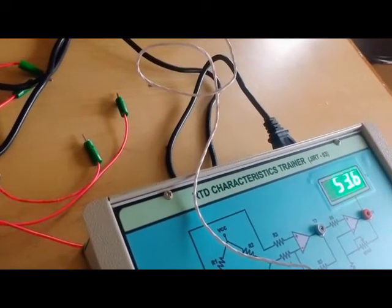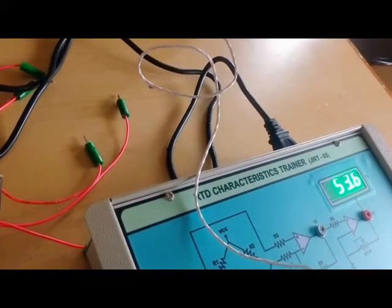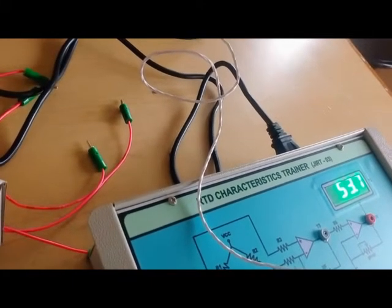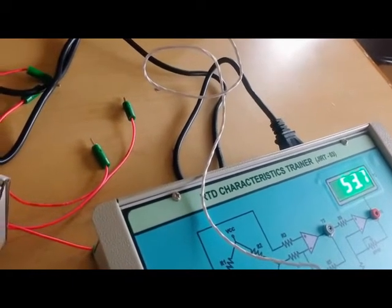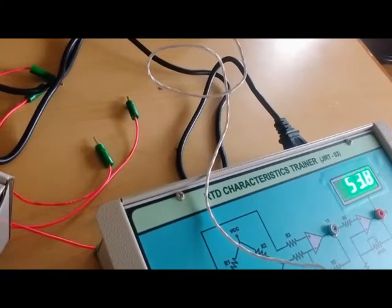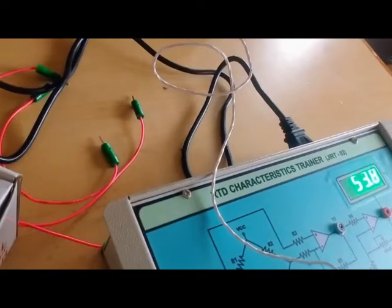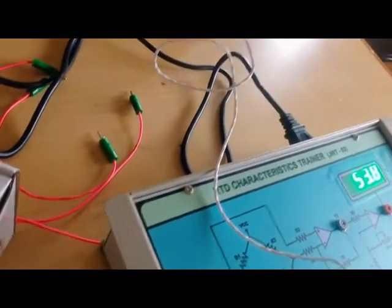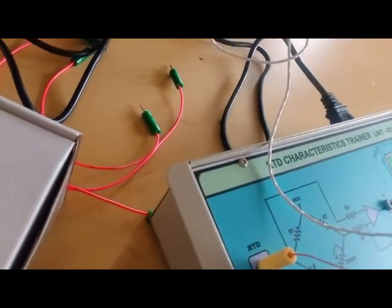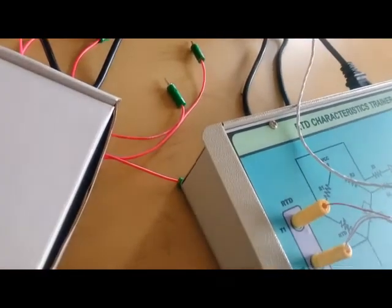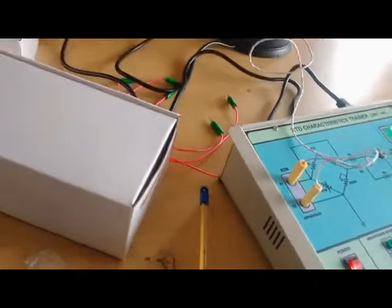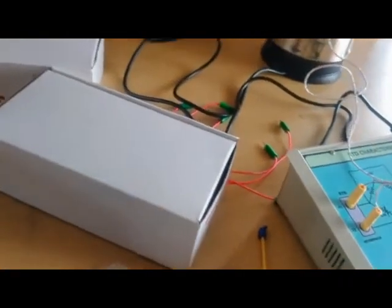You may take 3 to 5 readings in decreasing order so that you can get the accurate reading of the RTD sensor and also the thermometer reading.